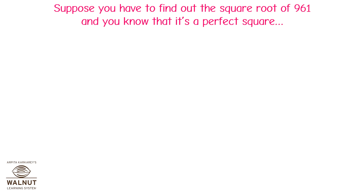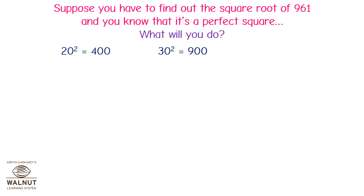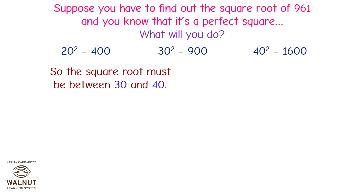Suppose you have to find out the square root of 961 and you know that it is a perfect square. What will you do? 20 squared is equal to 400, 30 squared is equal to 900, and 40 squared is equal to 1600. So the square root must be between 30 and 40.